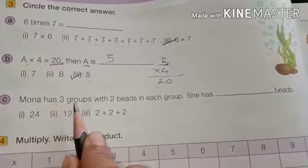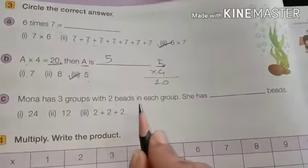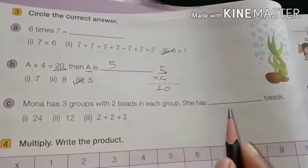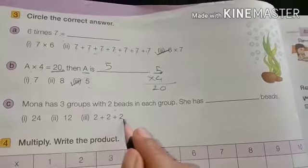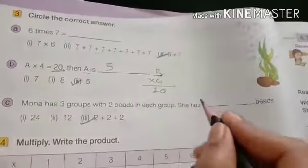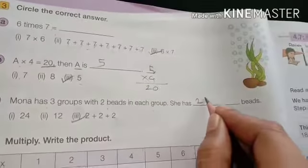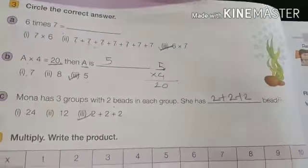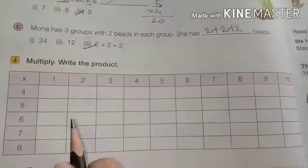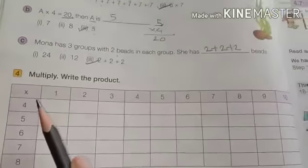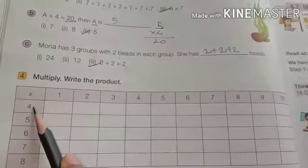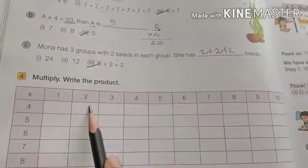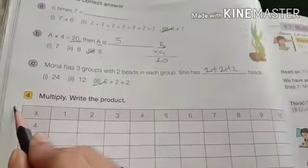Mona has 3 groups with 2 bits in each group. She has dash bits. 3 groups: 1, 2, 3. We can do correct and we can write here answer 2 plus 2 plus 2. Multiply, write the products. We have to multiply 4 multiply, 4 multiply 1 means 4 1's are 4. 4 multiply with 2, 4 2's are 8. Like this you have to do. This is your homework.